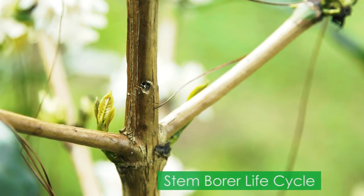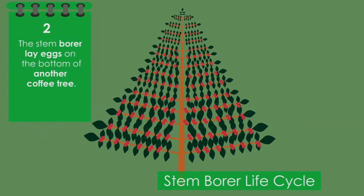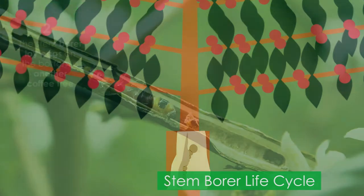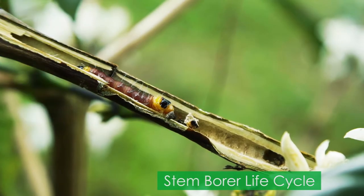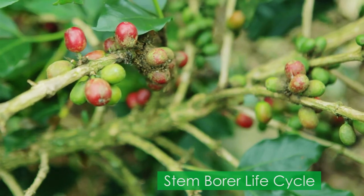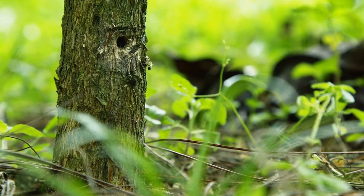Stem borer life cycle: the adult stem borer insect carves out an exit hole in the coffee stem and flies to mate. The stem borer lays eggs on the bottom of another coffee tree. The eggs grow into larvae, which eat around the stem and cut the sap supply by eating the cambium layer.